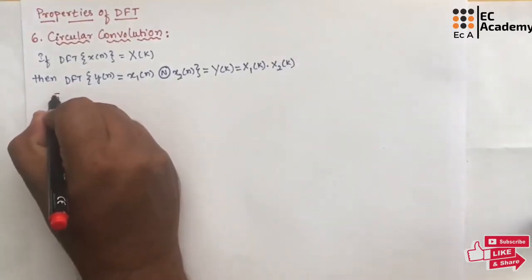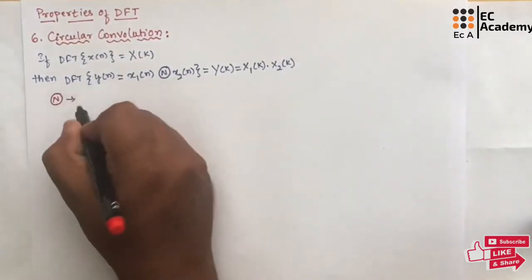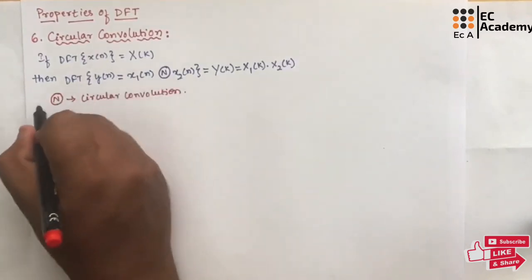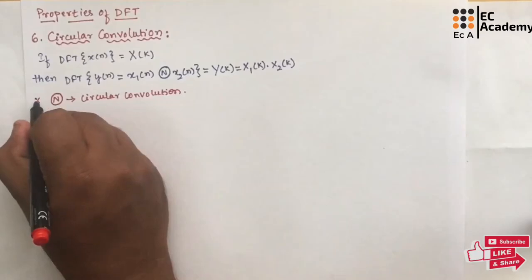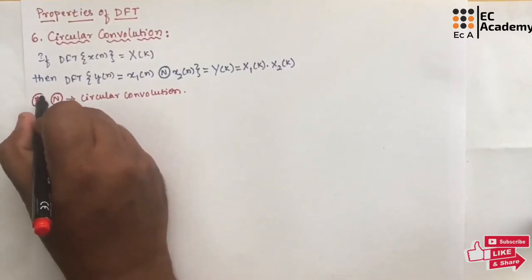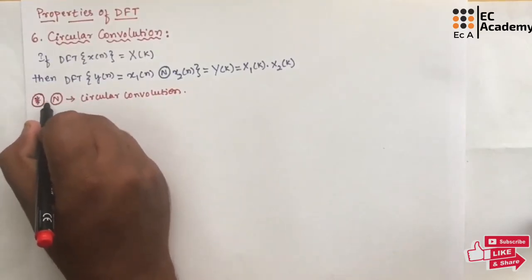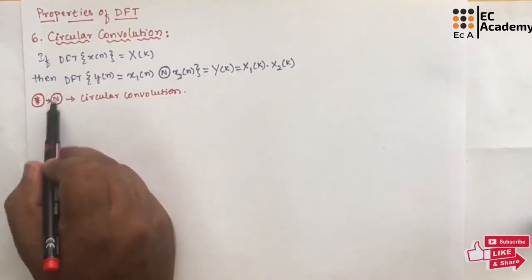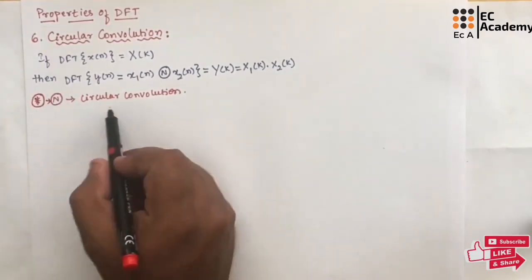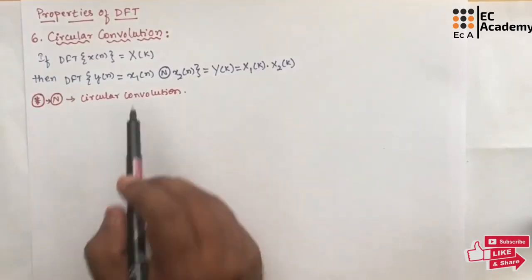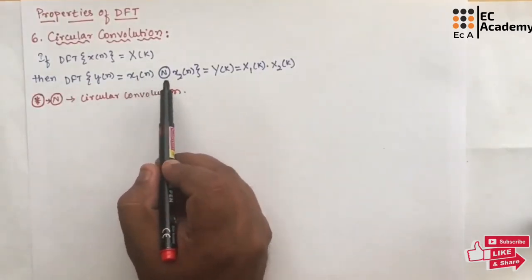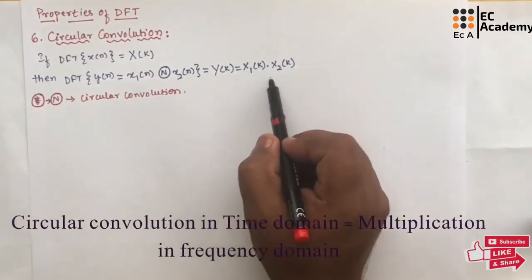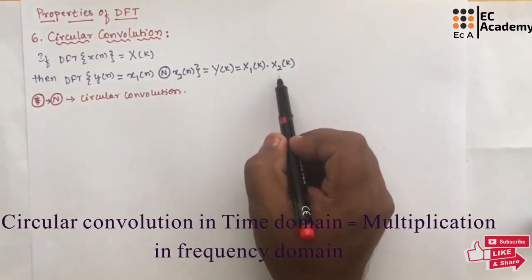Here, N with a circle represents circular convolution. This can also be written as star with a circle — both are the same. So the circular convolution of X1(N) with X2(N) will be equal to X1(K) into X2(K).